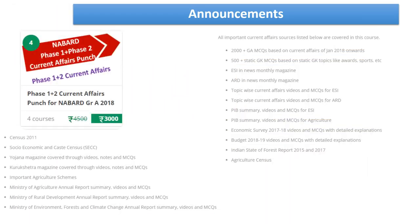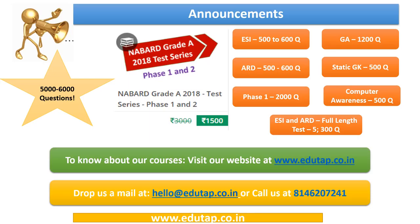We also provide a NABARD Phase 1 plus Phase 2 current affairs punch course, covering all important current affairs, available for rupees 3000. We have also recently launched a new course — NABARD Grade A 2018 test series for Phase 1 plus Phase 2 — where you get nearly 5000 to 6000 questions, available for rupees 1500. For queries, drop a mail at hello@edutab.co.in or call 814-620-7241.